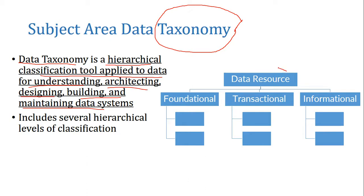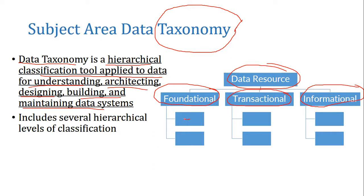There are three categories of data in the data resource hierarchy: foundational data, transactional data, and informational data. Every sort of data can be categorized under these three categories, and for each category there will be subcategories as well. This hierarchy can go up to three or four levels or even more.